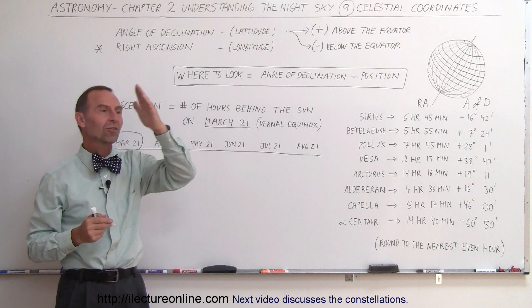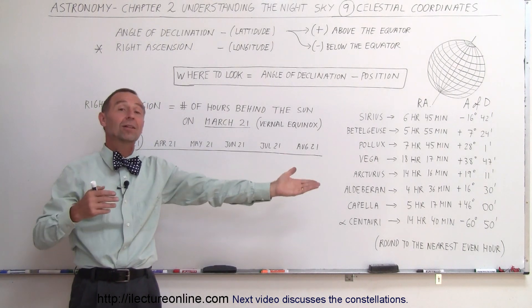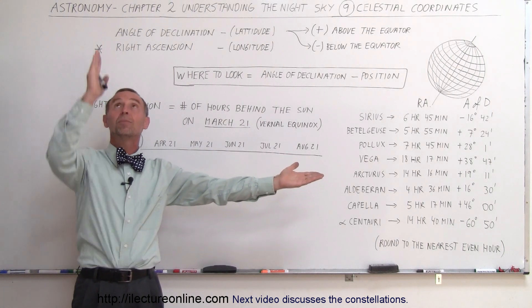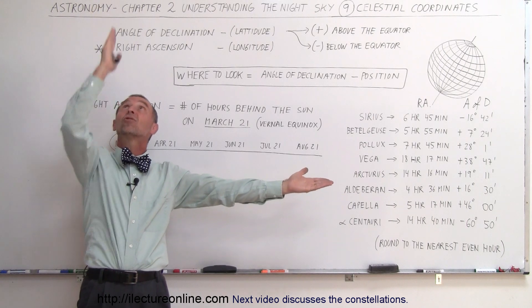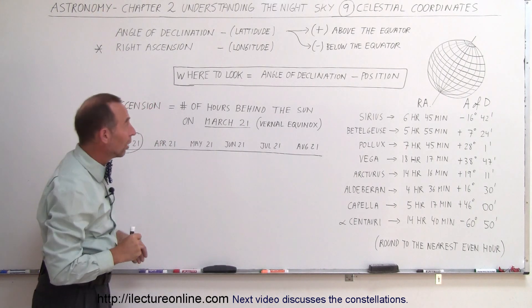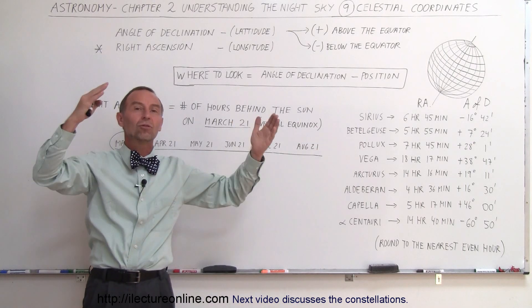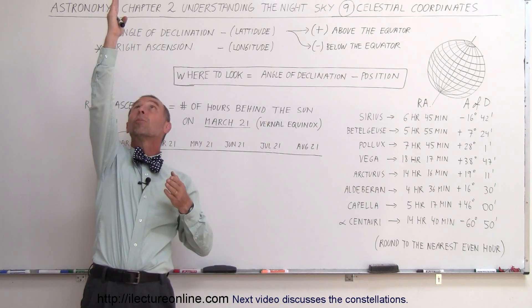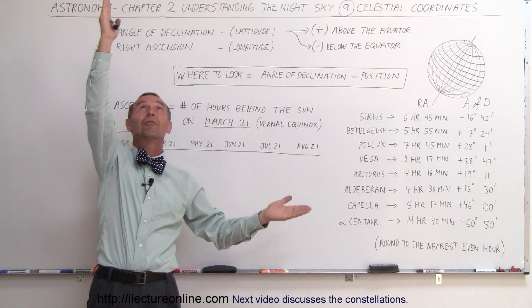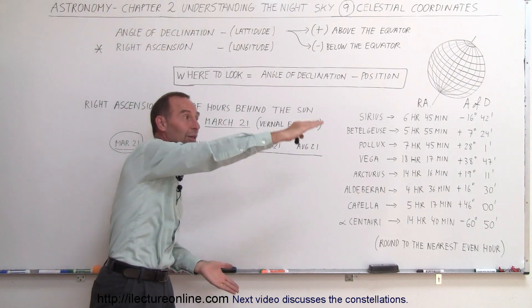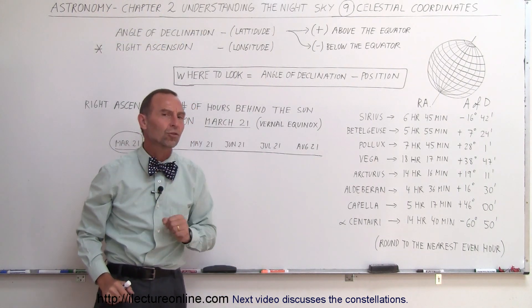So when the Sun sets at, let's say, six o'clock at night, then Sirius would be six hours behind it. Sirius would be straight up in the sky. So on March 21st, when the Sun disappears over the horizon, the sky turns dark, and you look up, Sirius will begin to appear directly above you, and now for the next six hours, Sirius will work its way down to the horizon. That's on March 21st.